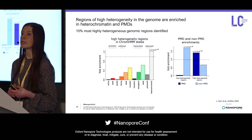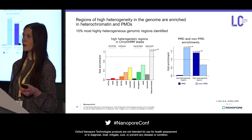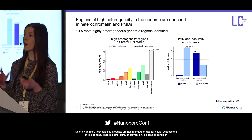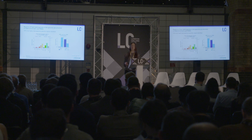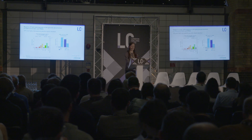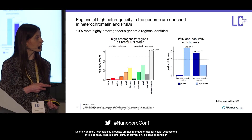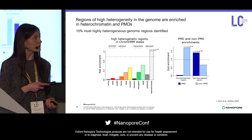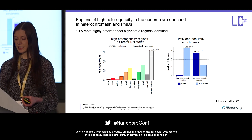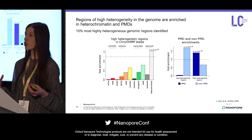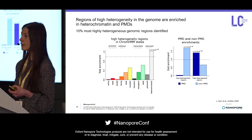I also did the enrichment analysis in PMDs and non-PMDs. A PMD is a partially methylated domain — a large genomic region with reduced methylation compared to the rest of the genome. I found that the most disordered regions of the genome are also significantly enriched in PMDs, indicating that the most disordered and heterogeneous patterns are associated with heterochromatin and partially methylated domains.